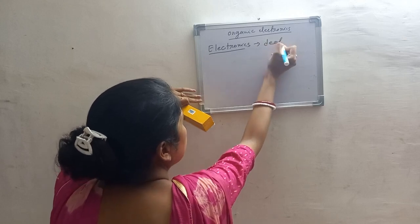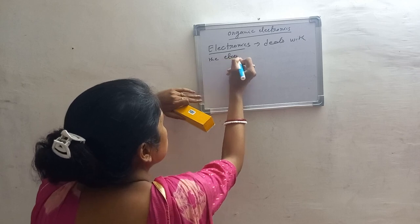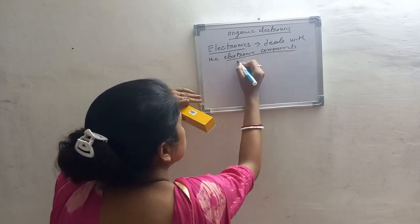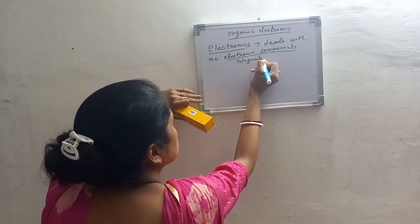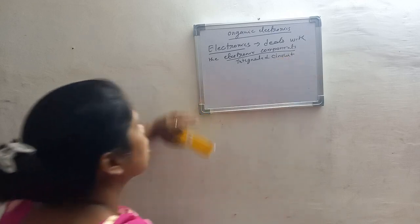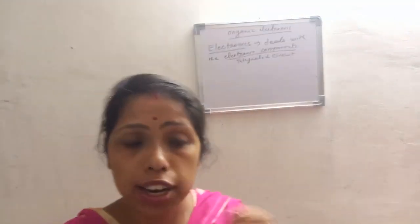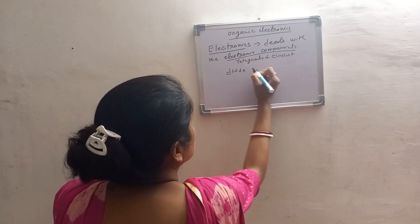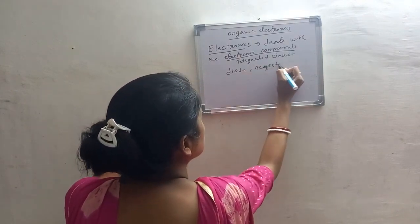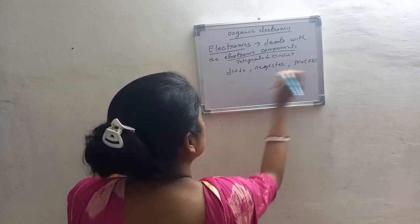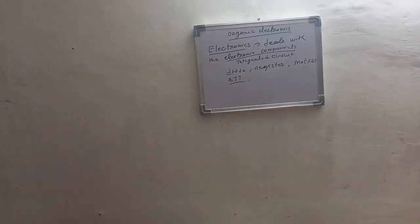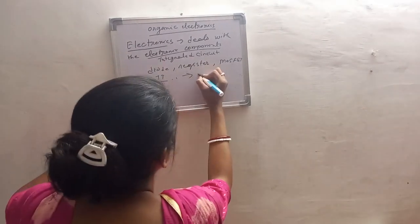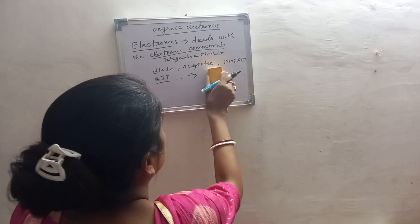Electronics deals with electronic components and is also called an integrated circuit. An integrated circuit consists of multiple electronic components. Electronic components include diodes, resistors, MOSFETs, and BJTs. These diodes, resistors, MOSFETs, and BJTs are designed using inorganic semiconductors.